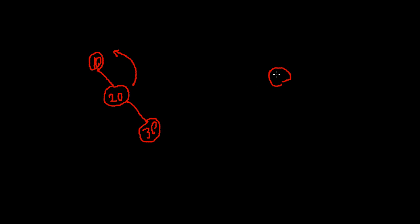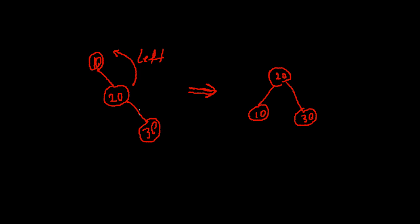Let's do a left rotation to see how it works. Let's say we have 10, 20, and 30. This is not balanced — we have nothing to the left and two nodes to the right of 10. What we do is a left rotation: pick 20 up and bring it to the top. So 20 is now on top, 10 is to the left, and 30 is to the right. Now this tree is balanced, with one node on each side. This is a left rotation.